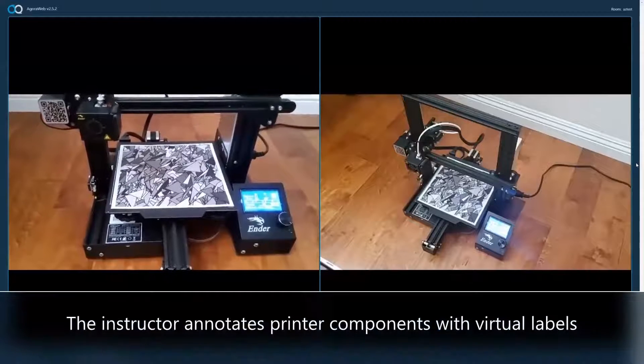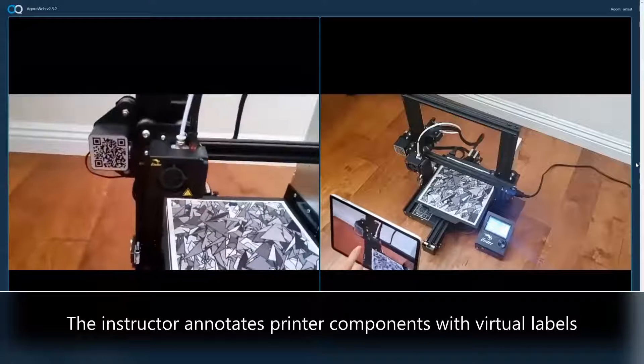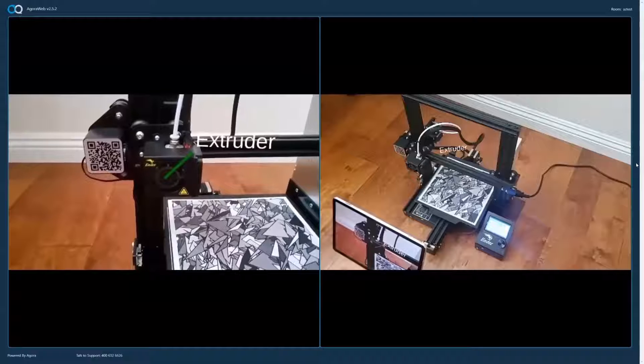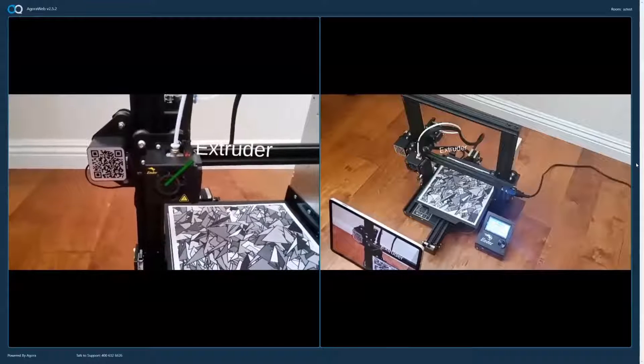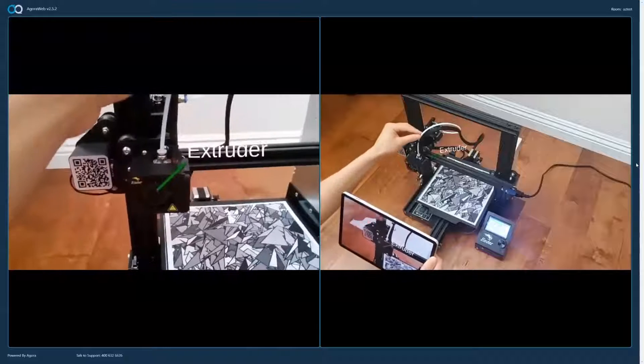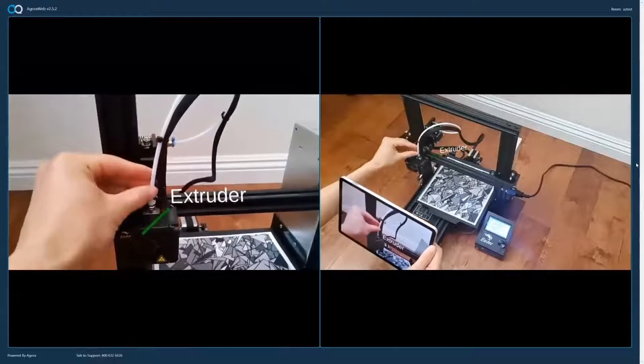To start off, we'll talk about the extruder and some of the related parts. The extruder is located here, and it has a hot end underneath that melts the filament, which is pushed through this tube into the hot end to melt by this gear in the back.